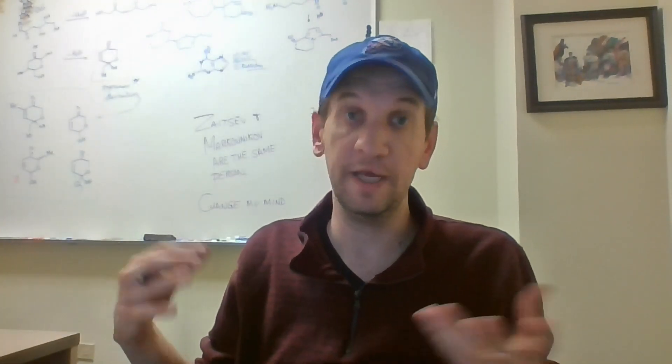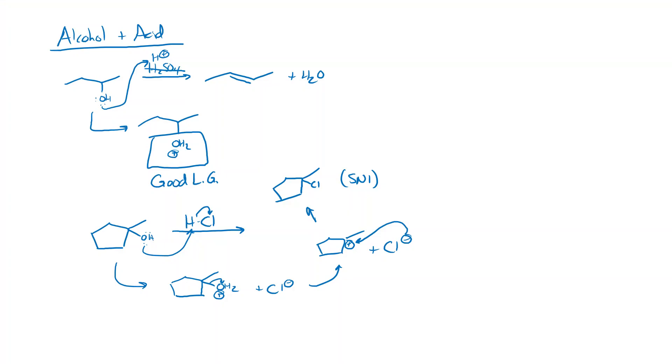But wait, why did it not do E1? Well, the answer is that it did do E1. And so if you want to have some fun mechanistically, which, I mean, we're all here, right? So if you want to have some fun, you can draw out the E1 product of that process. And then think about what happens if you take that E1 product, that alkene, and react it with HCl. And what you'll find is, of course, that you get this same product all over again.